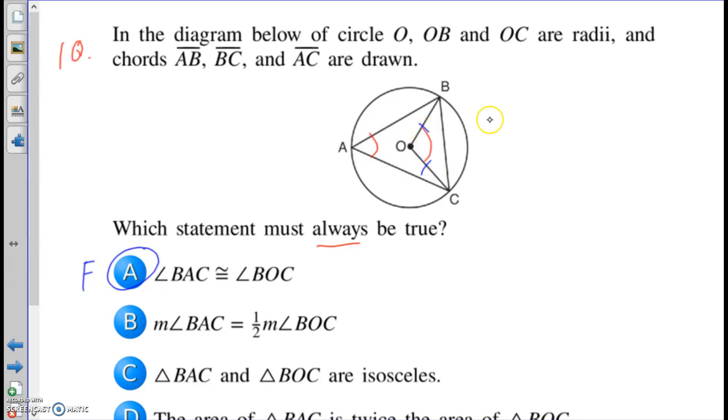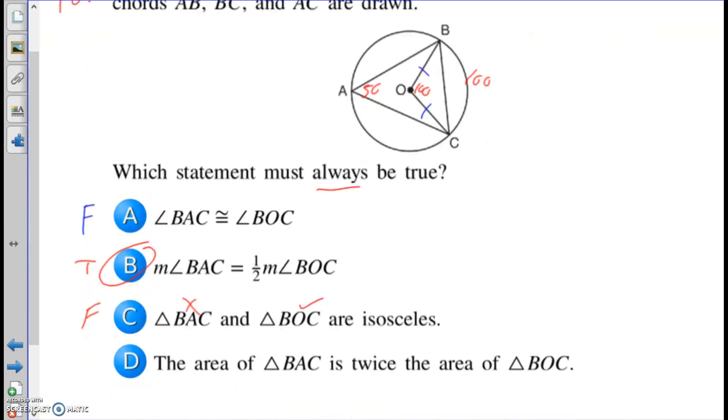Measure of angle BAC is half of measure of angle BOC. Yes, that's exactly what we're saying. We're saying that this is 50, this is 100, because this is 100. Is this half of that? Yes. Triangles BAC and BOC are isosceles. Well, BOC is definitely isosceles. I'm sorry, this is which statement must always be true. I misread that. I said, must not always be true. For somebody else, I was thinking not. So that's probably going to be my answer because this is false. Because BOC is isosceles because it's two radii. But BAC, they didn't tell us anything about those three lines being congruent.